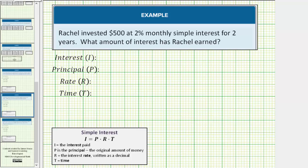Looking back at the given information, Raquel invested $500, so the principal is $500. The rate is 2% monthly simple interest, so the rate is equal to 2%.